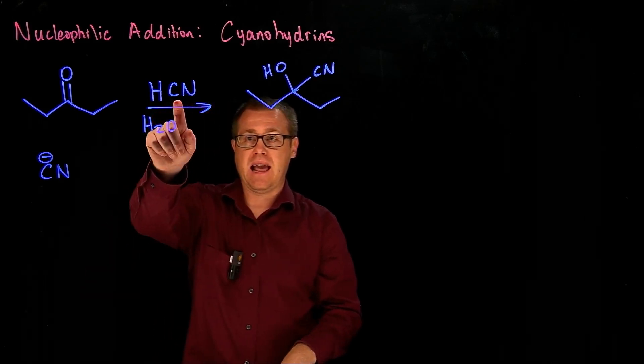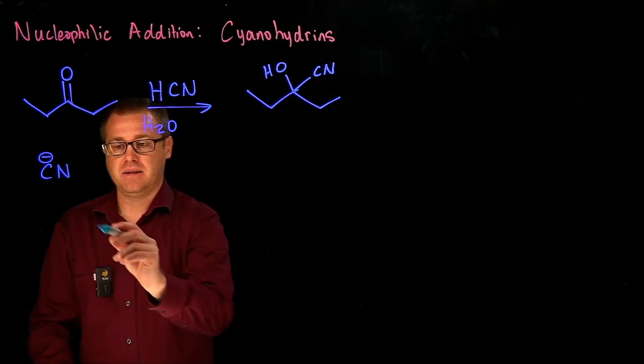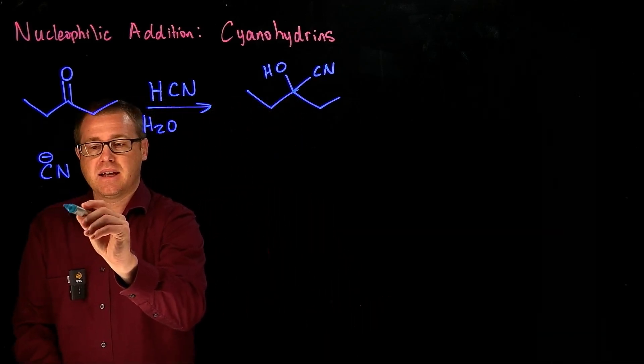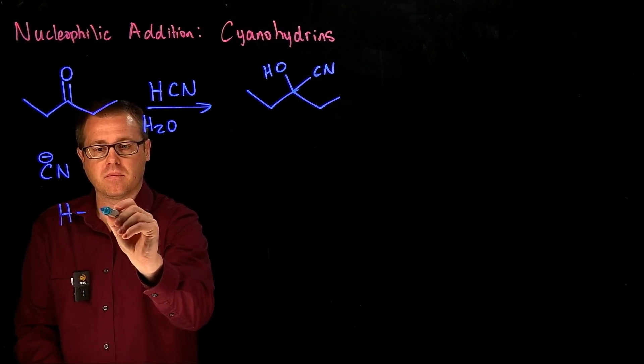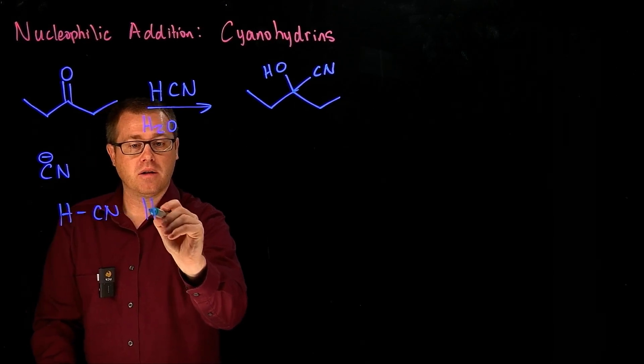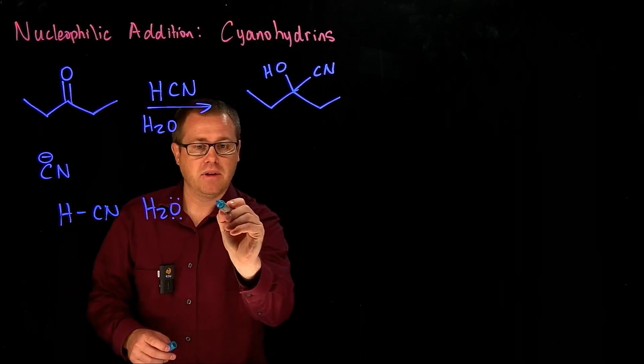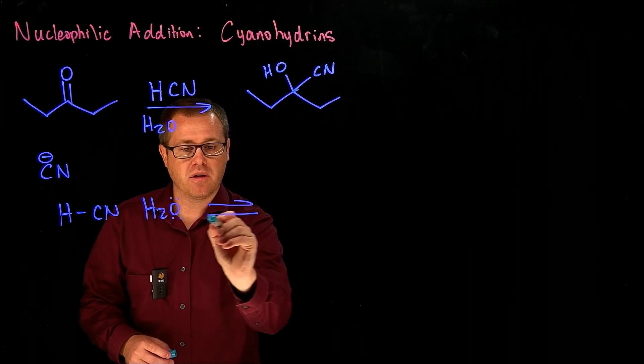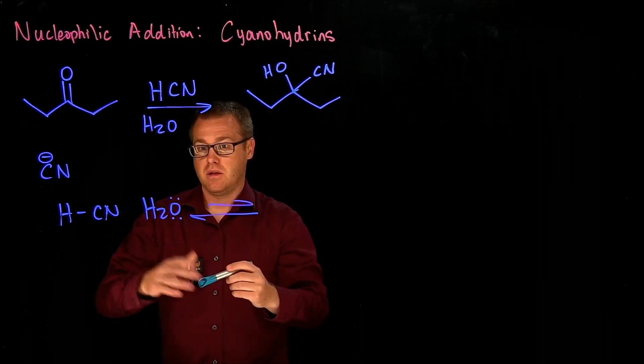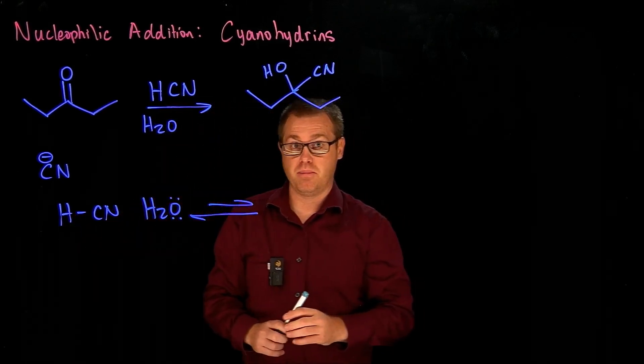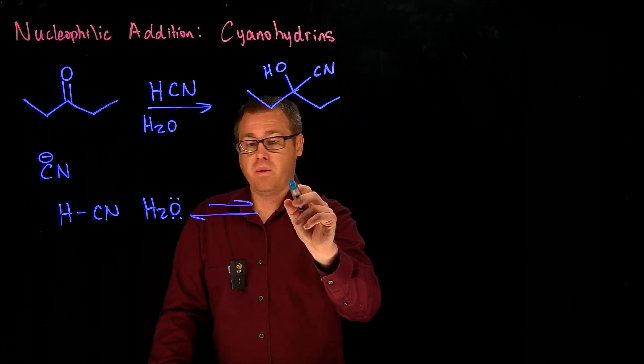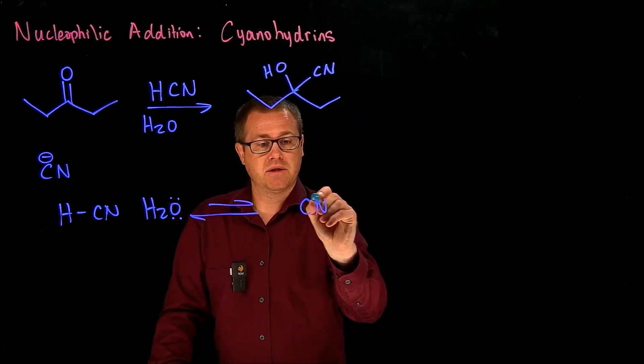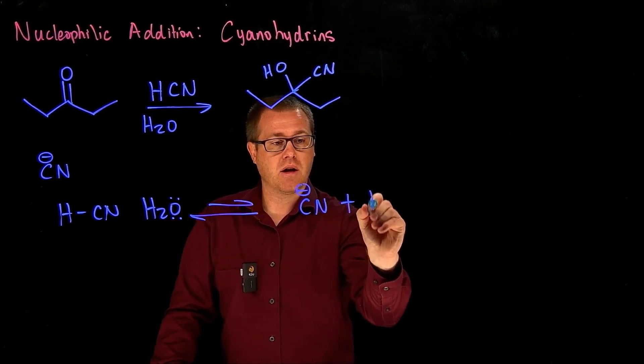Hydrocyanic acid is a weak acid. So when you put that cyanide acid there in water, equilibrium is going to favor the starting material by a pretty large margin. And so we would have this species right here plus our hydronium.